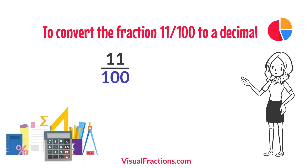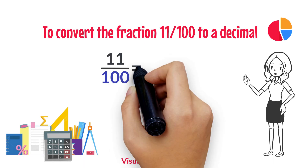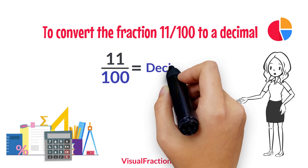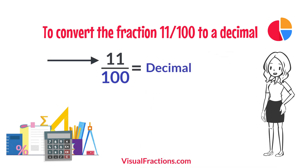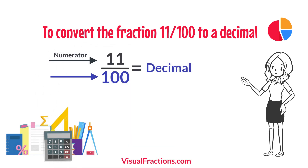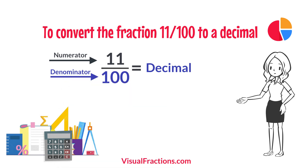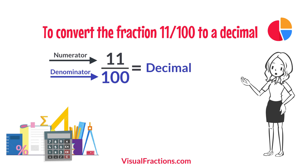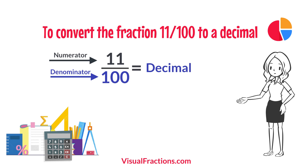To convert the fraction 11 one hundredths to a decimal, all we need to do is divide the numerator — the top number — by the denominator — the bottom number. So we simply divide 11 by 100. The answer we get is 0.11.